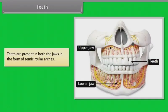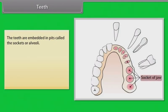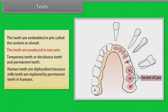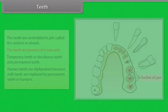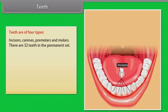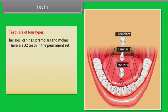Teeth are present in both jaws in the form of semi-circular arches, embedded in pits called sockets or alveoli. Teeth are produced in two sets: temporary or deciduous teeth and permanent teeth. Humans are diphyodont because milk teeth are replaced by permanent teeth. Teeth are of four types: incisors, canines, premolars, and molars. There are 32 teeth in the permanent set.